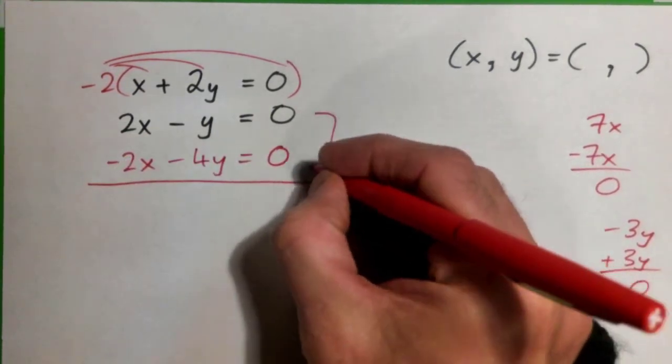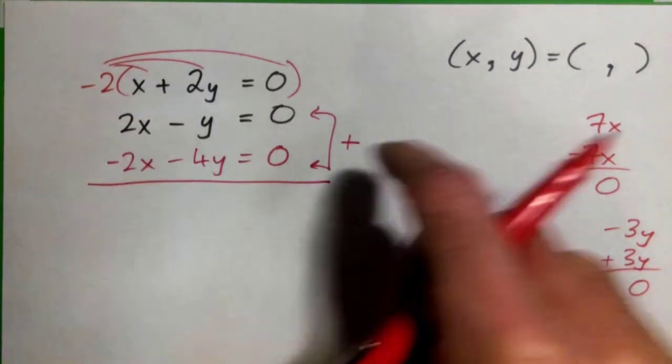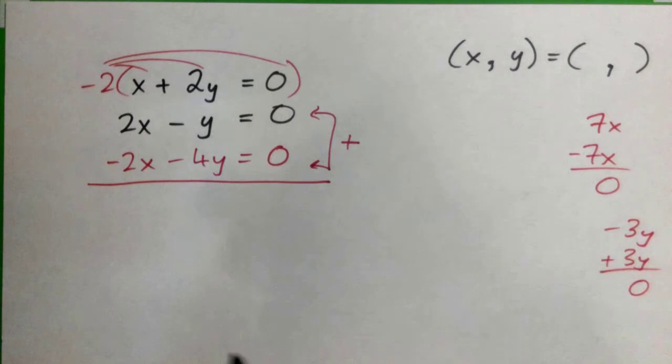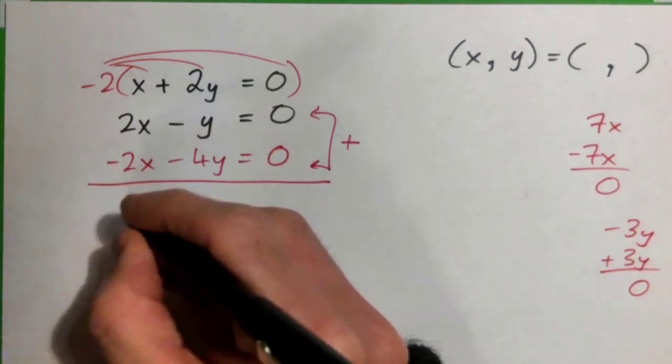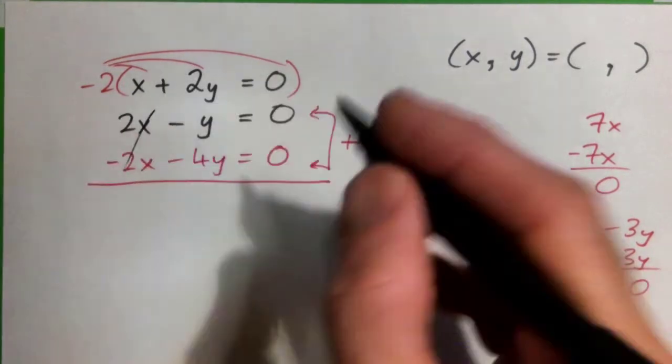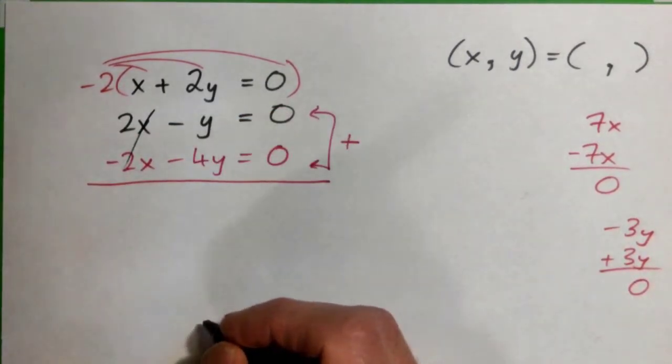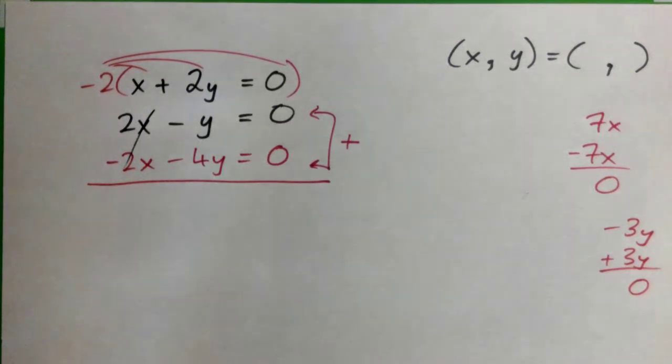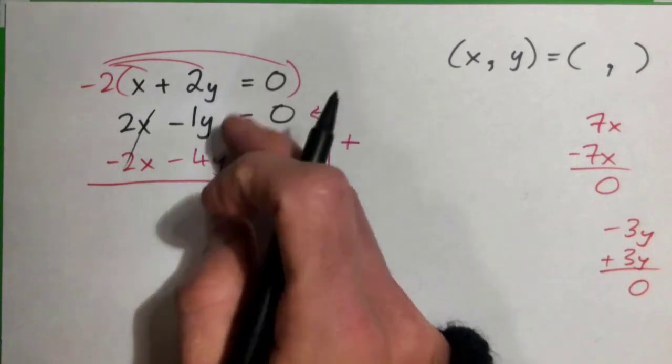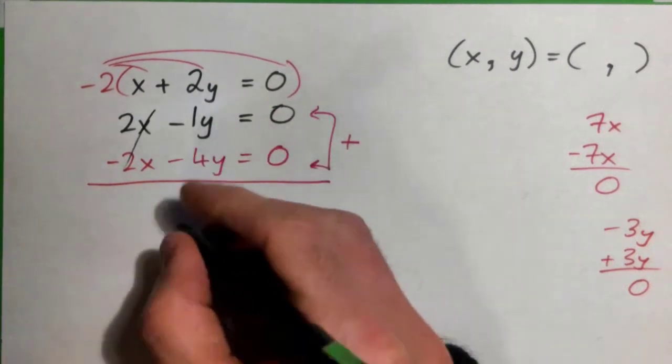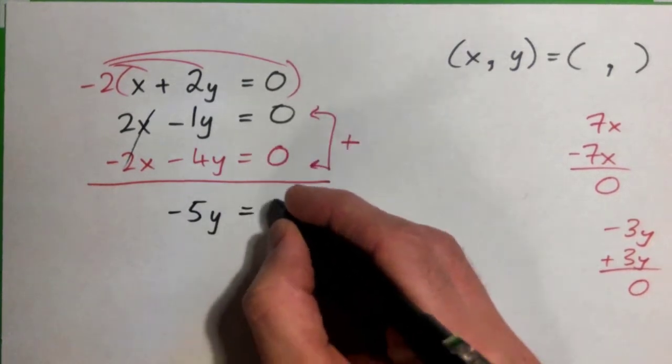Now I can add these equations together and the x's will eliminate. 2x minus 2x is 0 - x's are gone. Negative y and negative 4y - when you put them together, it's like negative 1 and negative 4, one negative and four negatives makes five negatives. Negative 5y equals, and then 0 and 0 makes 0.